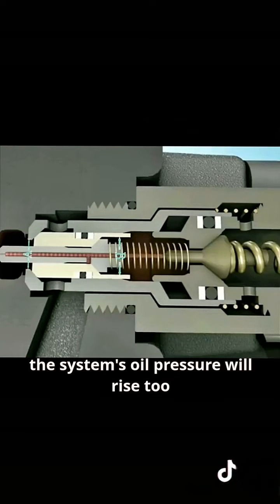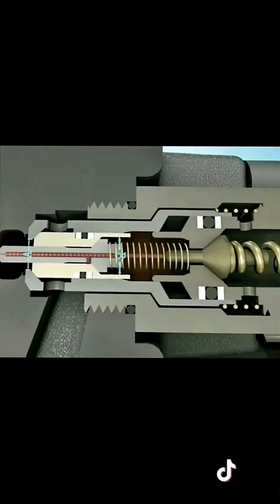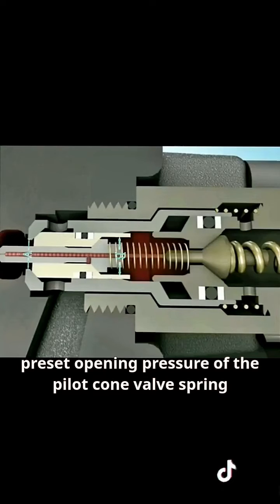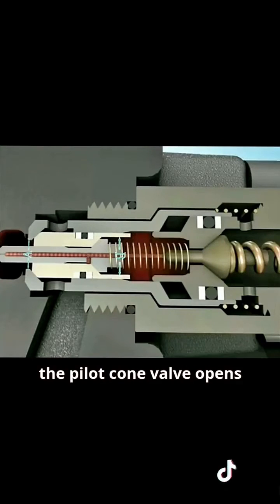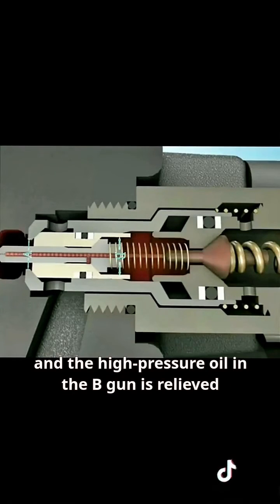If the load on the boom suddenly increases, the system's oil pressure will rise too. When the pressure in cavity B reaches the preset opening pressure of the pilot cone valve spring, the pilot cone valve opens, and the high-pressure oil in cavity B is relieved.